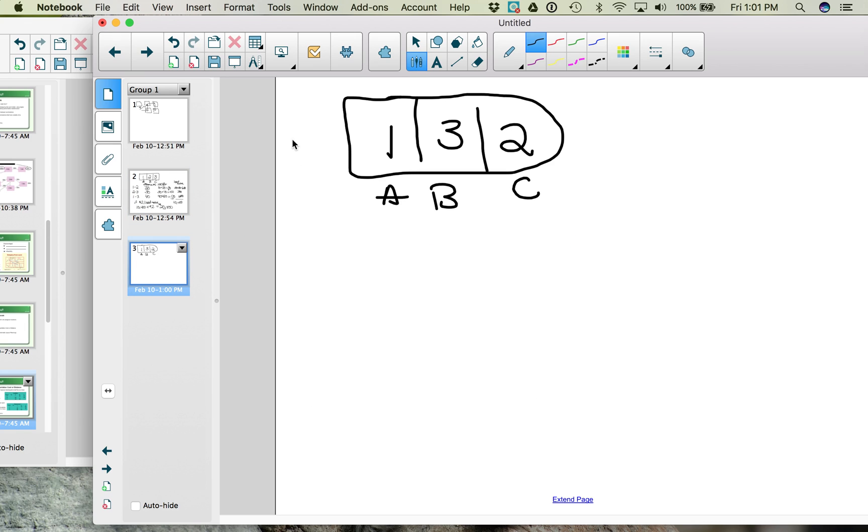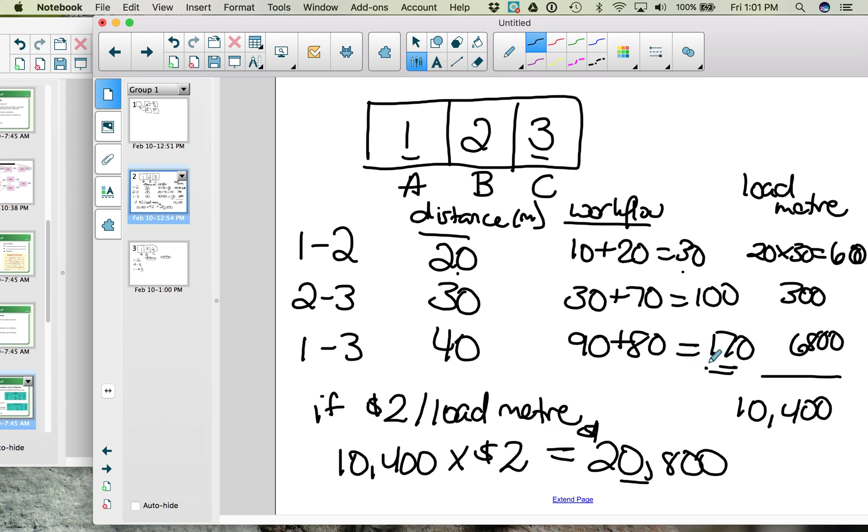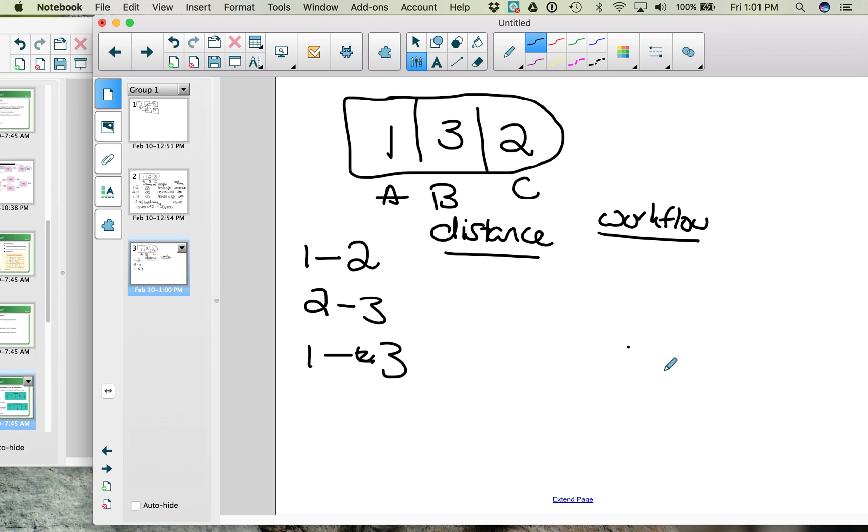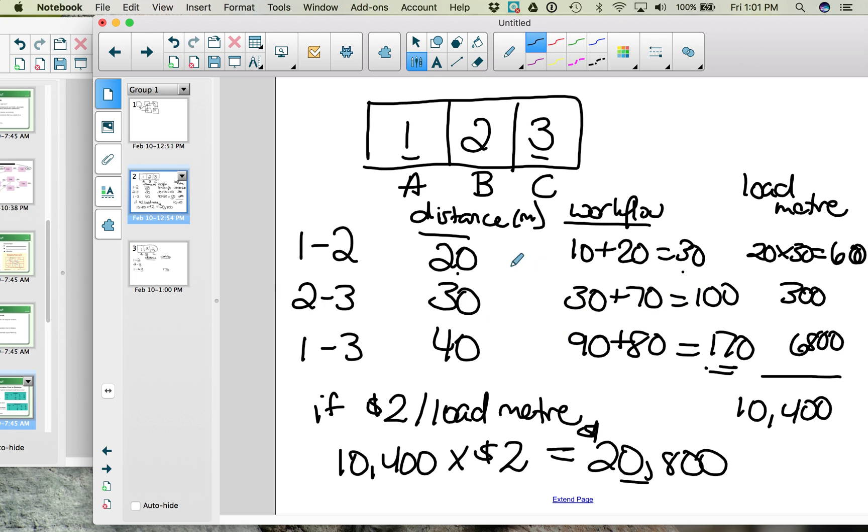Let's double check that this is more cost effective. Again, we have 1 and 2, 2 and 3, 1 and 3 in terms of relationships we need to look at. We need to look at the distance they are and we need to look at workflow. We don't actually have to recalculate workflow because workflow is based on the departments, not on their locations. So the workflow between 1 and 3 is still 170. The workflow between 2 and 3 is still 100. And between 1 and 2, it's 30.